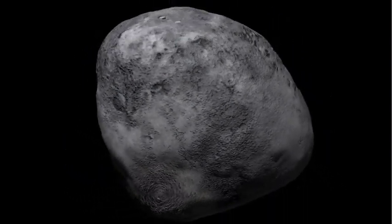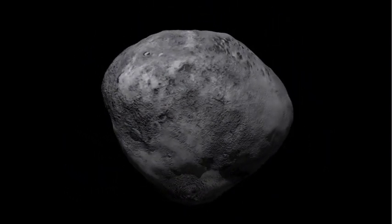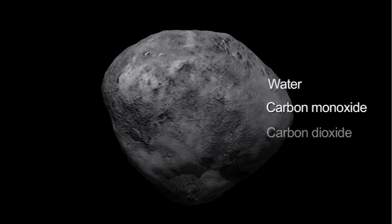Whipple envisioned comets as conglomerates of frozen gases, mainly water, carbon monoxide and carbon dioxide, together with the primordial dust of the early solar system.